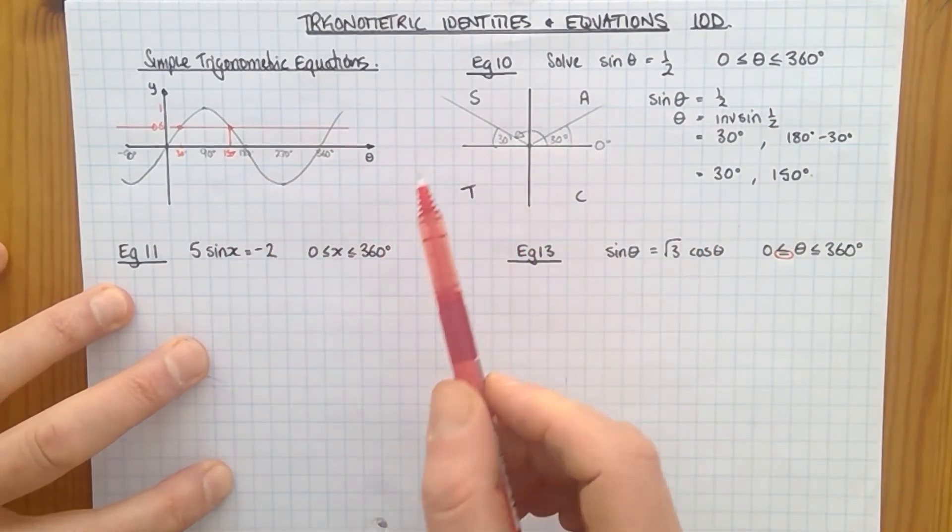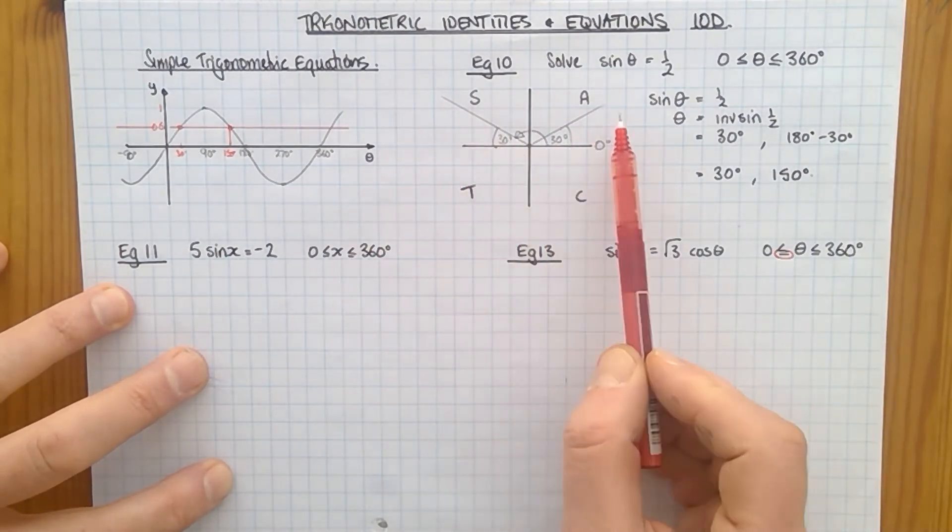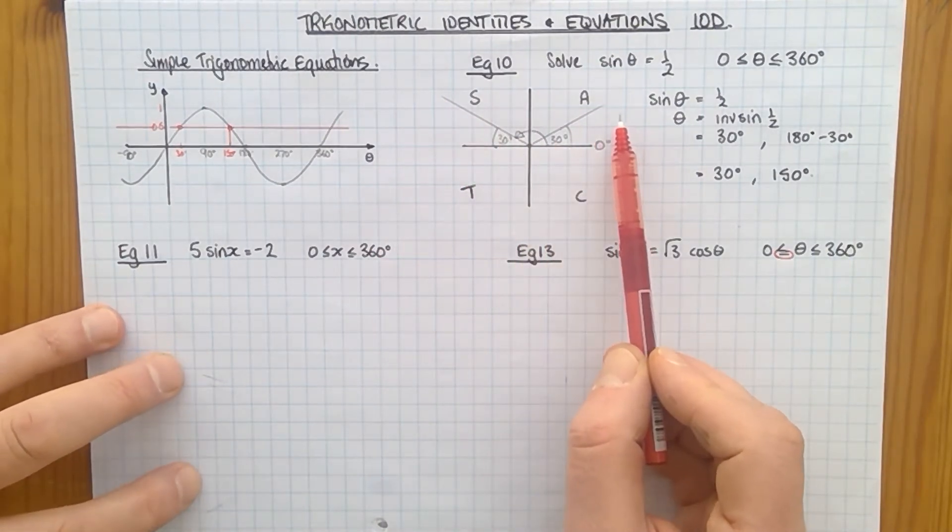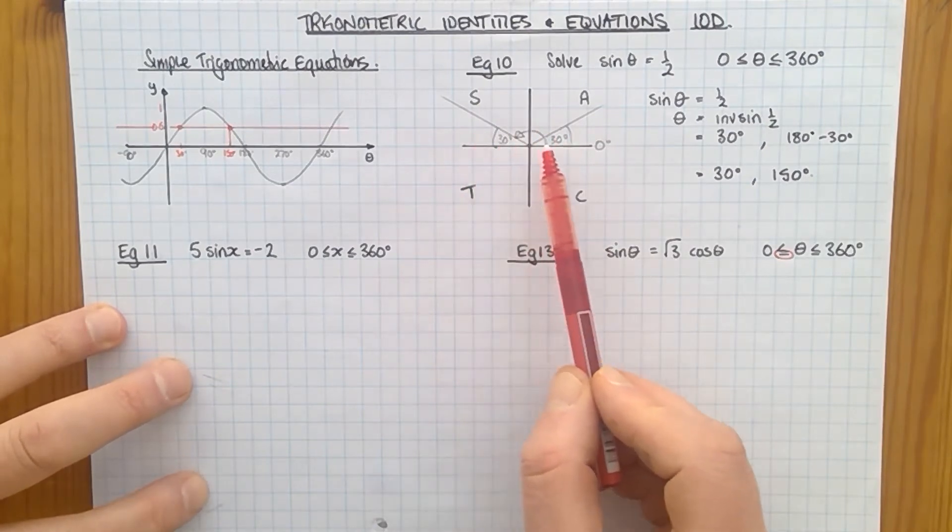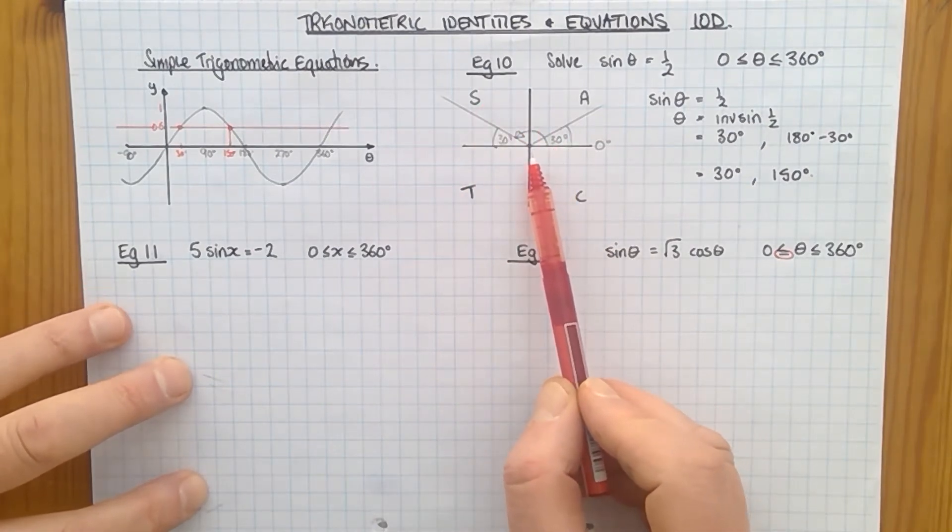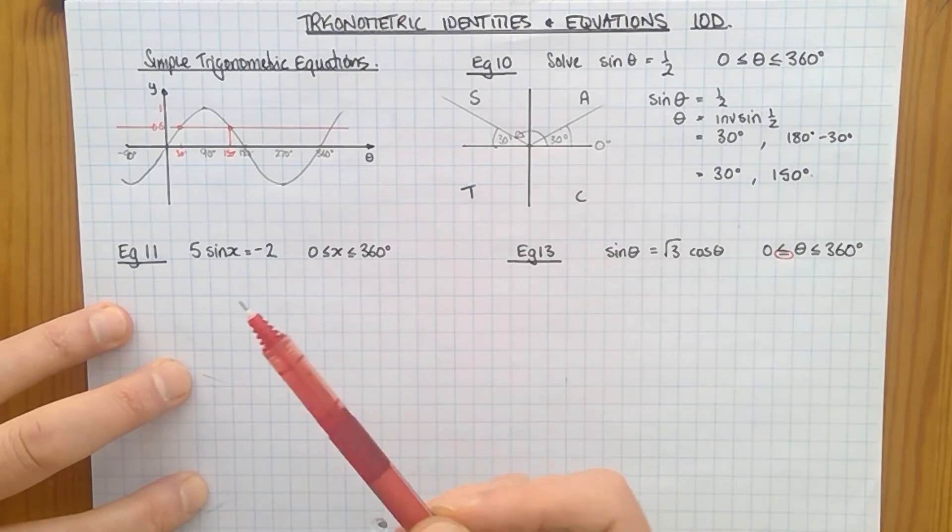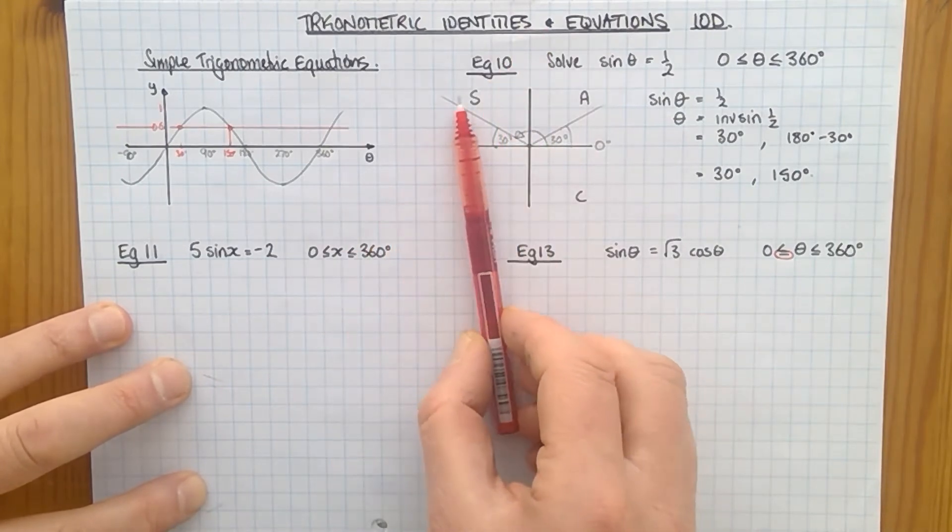And these are the two ways you can do it, either by drawing your lines on your CAST diagram, making sure you get them in the right place. The primary value is the easy one to start off with, but making sure the second one is in the right place. For sine, it reflects in the y-axis.